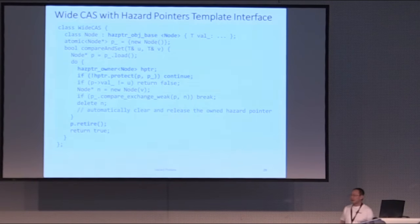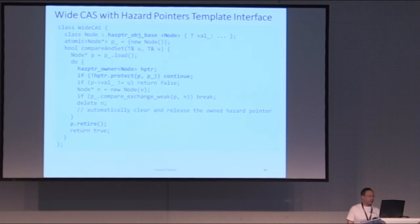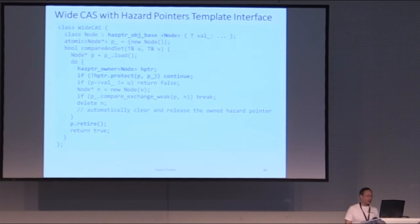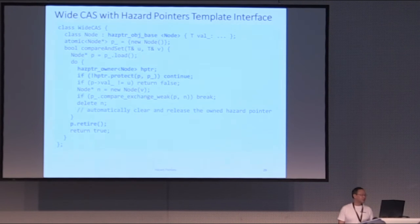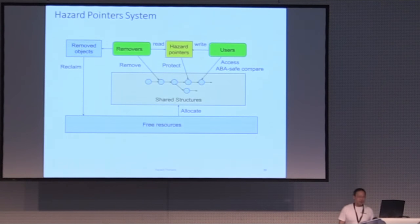This is the C++ template interface we're proposing for the C++ standard. The node inherits from a type that adds capabilities, and we have a hazard_pointer_owner that automatically acquires a hazard pointer based on RAII. There is a protect function that protects the value if it succeeds, so we can proceed without worrying about the object being reclaimed prematurely. When we reach the end of scope of the HP owner, it automatically clears the hazard pointer. From the removal side, when you have an object, you don't delete it — you retire it, handing it over to the hazard pointer library to reclaim when safe.